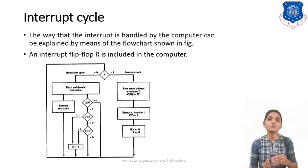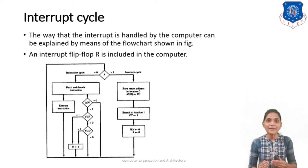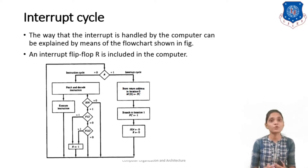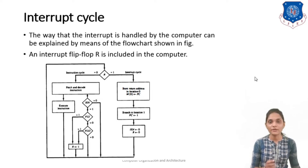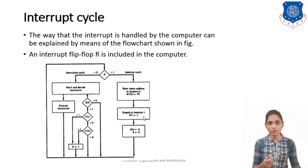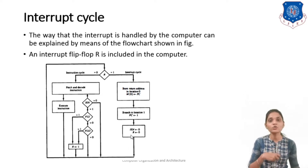For this execution of the interrupt cycle you have to do some branching operation. For that you have to change the sequence of execution, that means you have to change the content of the program counter. But after executing that sequence you have to return to the main program, and for that returning to the main program you require to store this value of the program counter at some location. Generally we are going to use location 0 for storing this value, and we are going to store the subroutine for this interrupt at location 1. So here you know that you are not going to provide service to any other interrupt because you are already providing service to one interrupt.